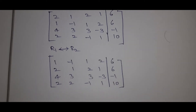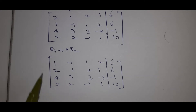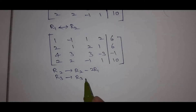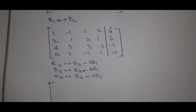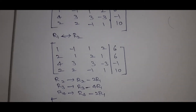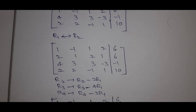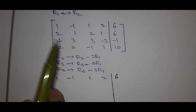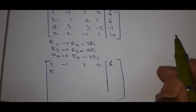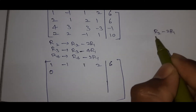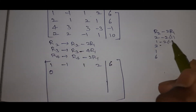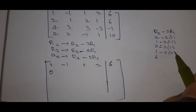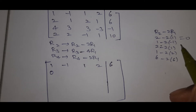Now apply R2 → R2 - 2R1, R3 → R3 - 4R1, R4 → R4 - 2R1. For R2: 2 - 2×1 = 0; -2×(-1) gives entries computed. 2 - 2 = 0; 2 - 2 = 0.